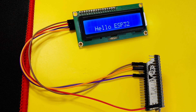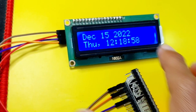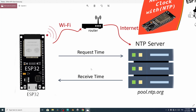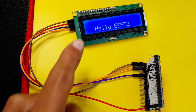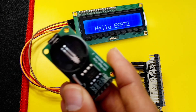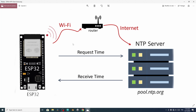Now that we know how to use the LCD display, let's make a project that takes advantage of the ESP32's Wi-Fi capability. We are going to display the date and time on the LCD display using the NTP server — Network Time Protocol — which lets you get the local time in your country. You don't need any external hardware like an RTC module; instead we connect the ESP32 to your router using its SSID and password and request the time from the internet.